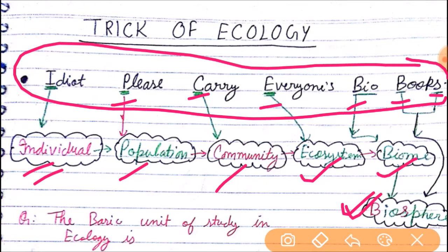This is the trick for remembering the most important ecological hierarchy. The basic unit is Individual, and Individual is also called Organism — so individual equals organism.